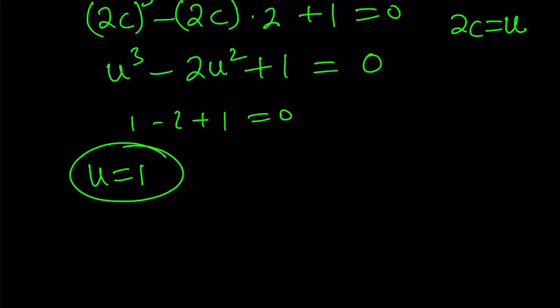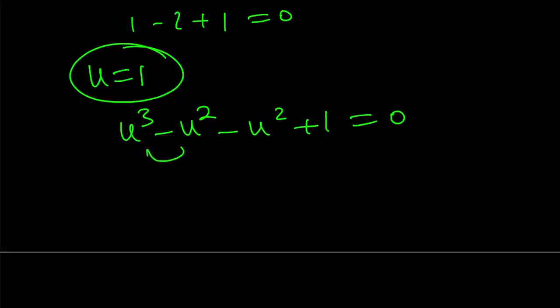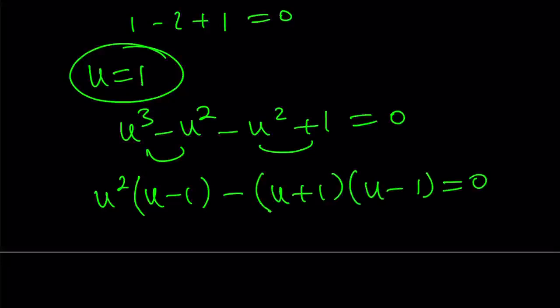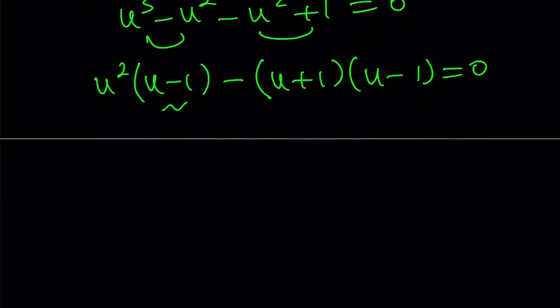Now, let's go ahead and arrange this polynomial and we can just factor it. u cubed minus u squared minus u squared plus 1. We can factor by grouping. We can take out u squared times u minus 1. Minus u squared minus 1 can be written as u plus 1 times u minus 1. Now, u minus 1 is a common factor. We can take it out, and we get u minus 1 multiplied by u squared minus u minus 1. And the whole thing is equal to 0.